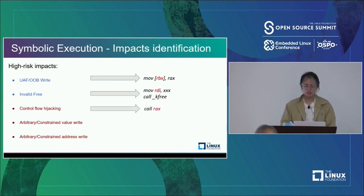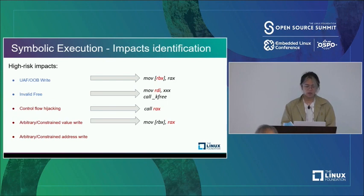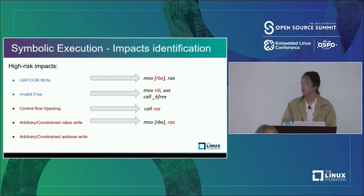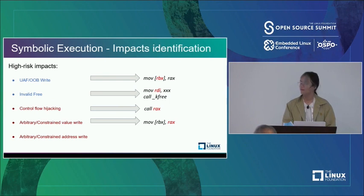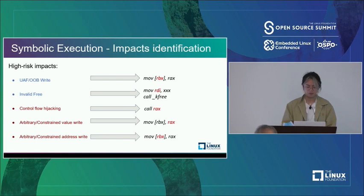For control flow hijacking, we check if the call-to address is symbolic. For arbitrary or constrained value write, we check the written value — if it's symbolic, we check for constraints: constrained if there are constraints, arbitrary if not. For arbitrary or constrained address write, the same theory applies but we check if the write-to address is symbolic.